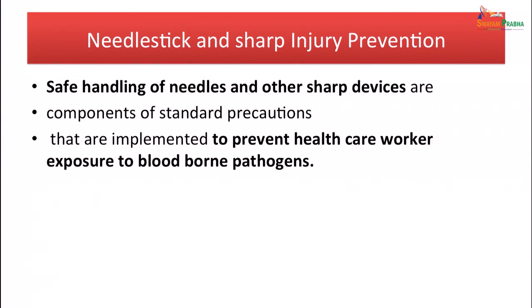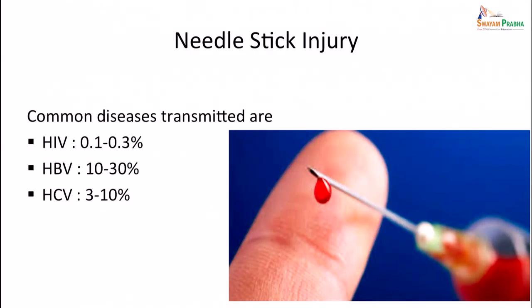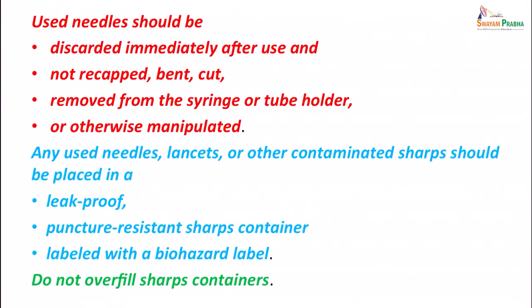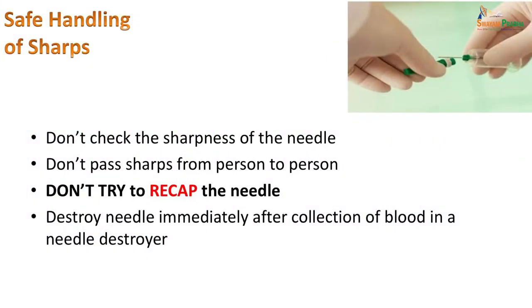For needle stick and sharp injury prevention, safe handling is important. Standard precautions are implemented to prevent exposure to blood. Needle stick injury transmits HIV in 0.1–0.3% of cases, HBV in 10–30%, and HCV in 3–10%. Used needles should immediately be discarded and never recapped, bent or cut, and should not be removed from the syringe or tube holder. Any used needles, lancets or contaminated sharps should be placed in a leak-proof, puncture-resistant sharps container labelled with a biohazard label, and the container should not be overfilled. Do not check the sharpness of the needle, do not pass a needle from one person to another, do not recap the needle — destroy it immediately in a needle destroyer.